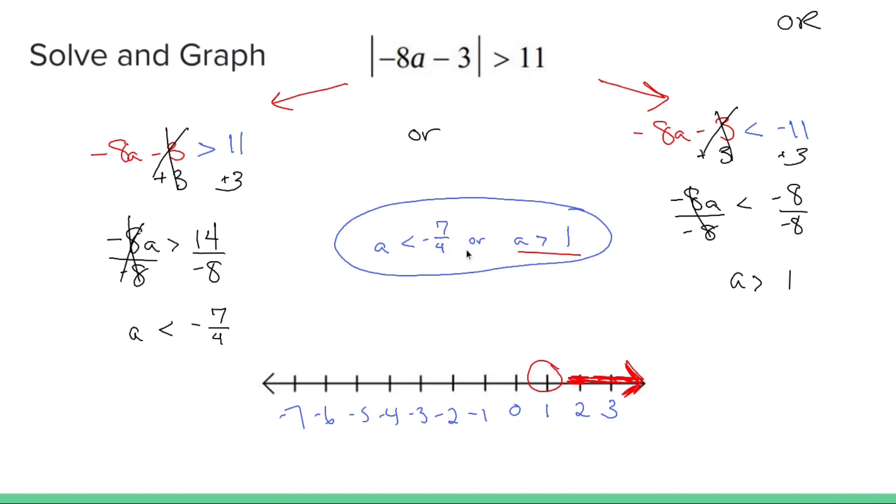Negative 7 over 4 is negative 1.75, so that's going to live right around here. Put a circle there. And since a is less than that, we shade everything to the left. So what this means is I can plug in 2, I can plug in negative 7, I can plug in any number that this red shading represents, and that would make this statement completely true.